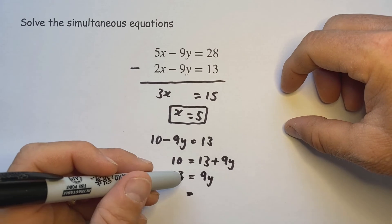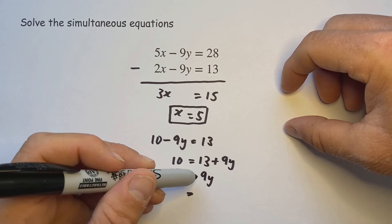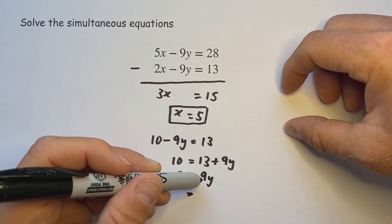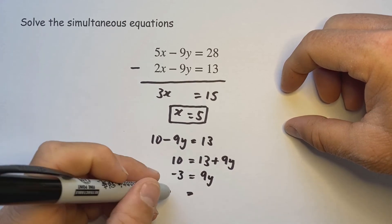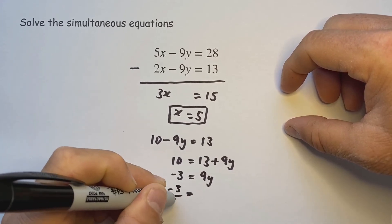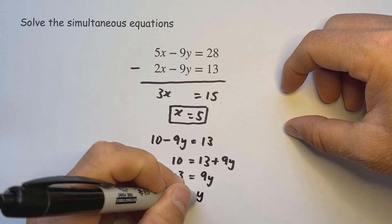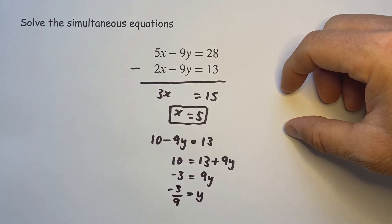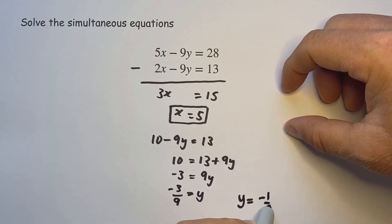Well as I pointed out before, if you don't belong in the times table then you just do a division. So if I put that 9 over here as a division I have minus 3 over 9 is equal to y. However you can tidy that up because you know that 3 over 9 is the same as one third, so y equals minus one third.